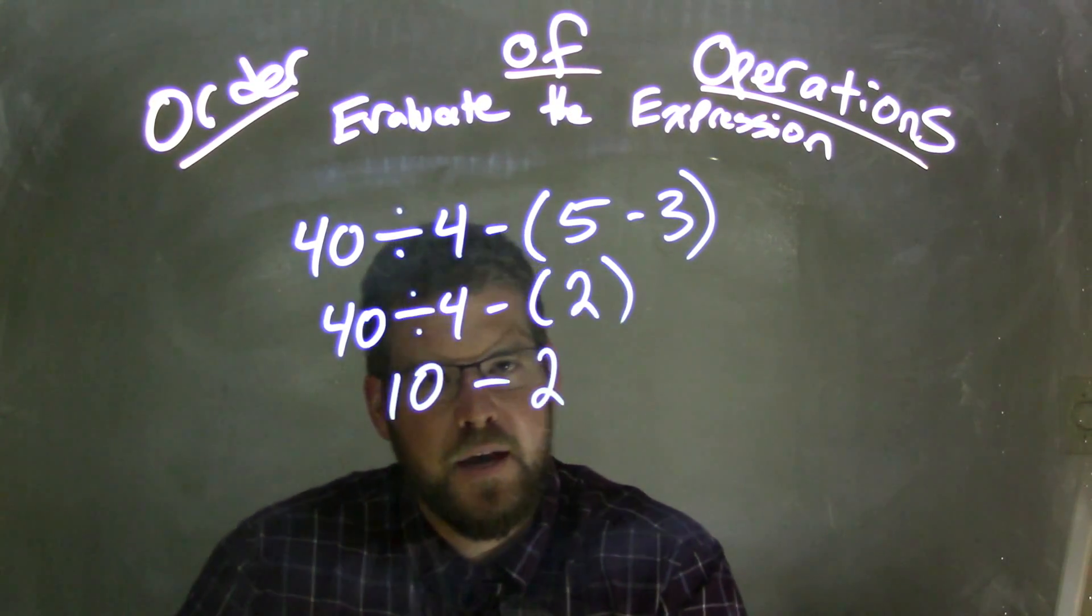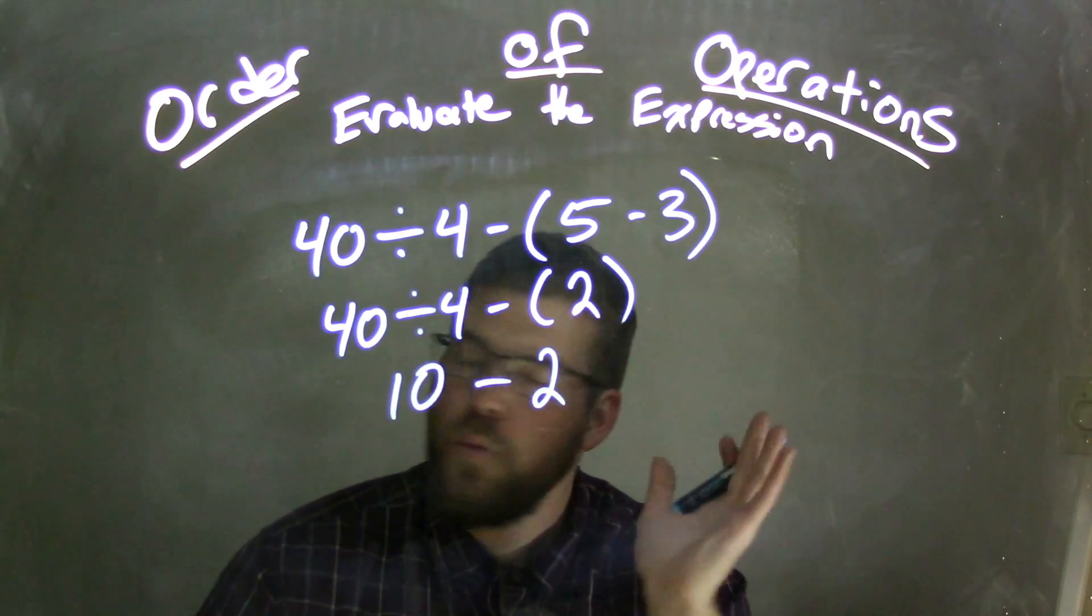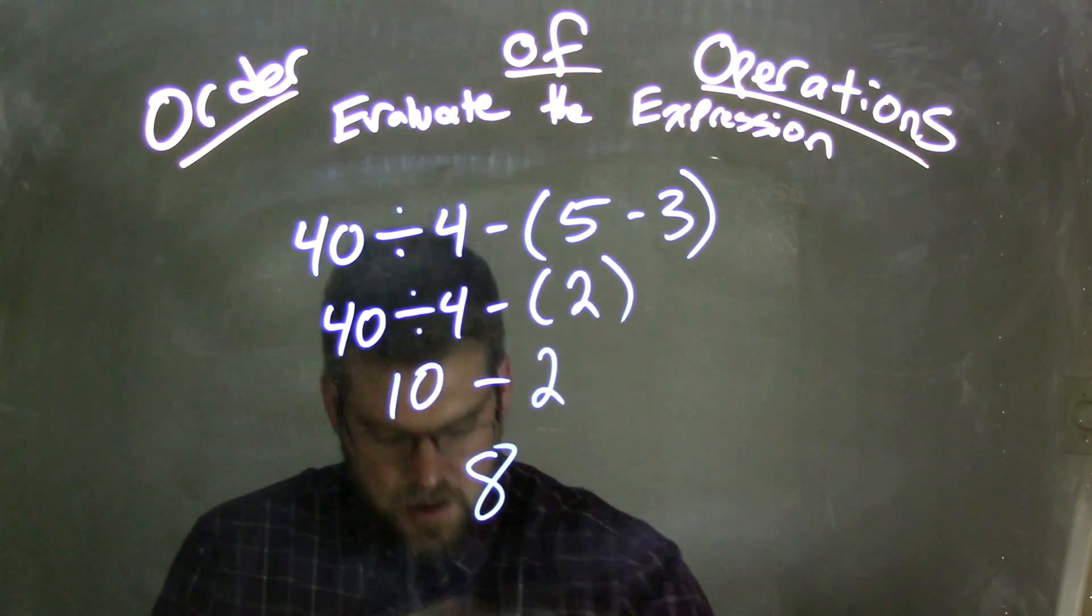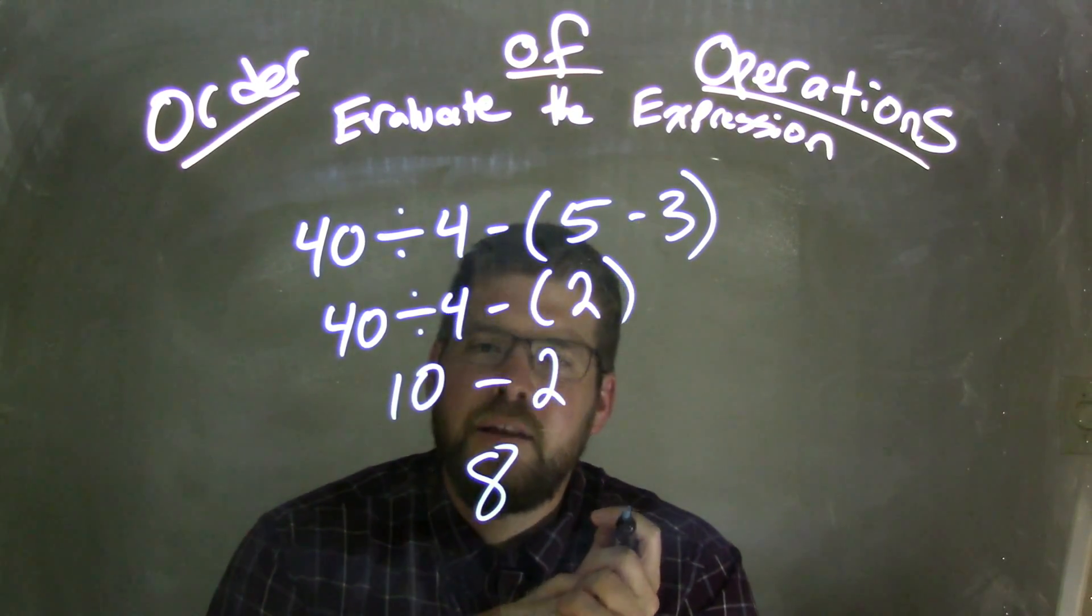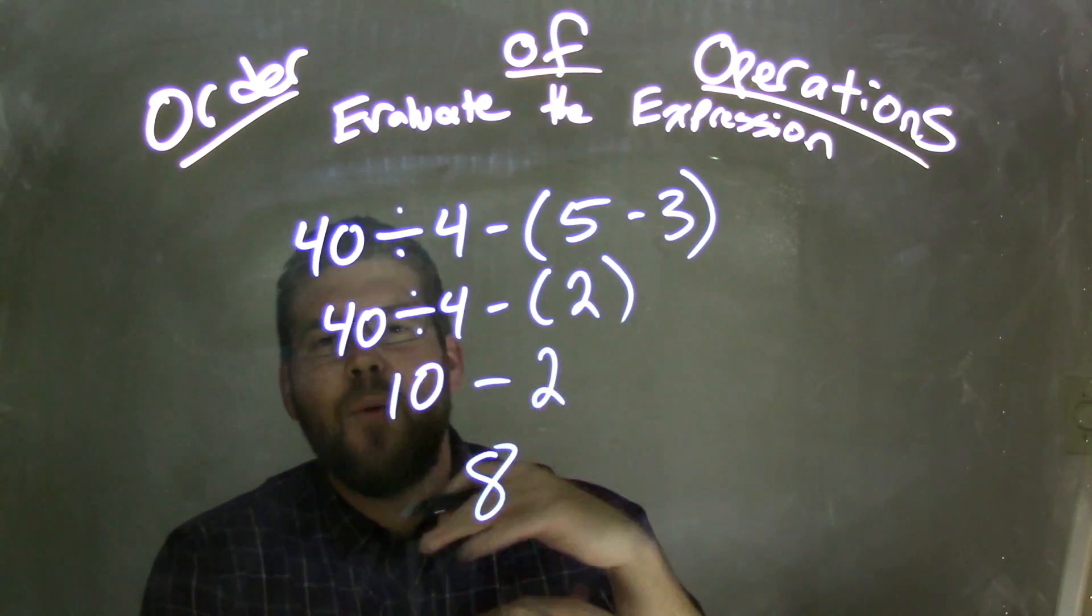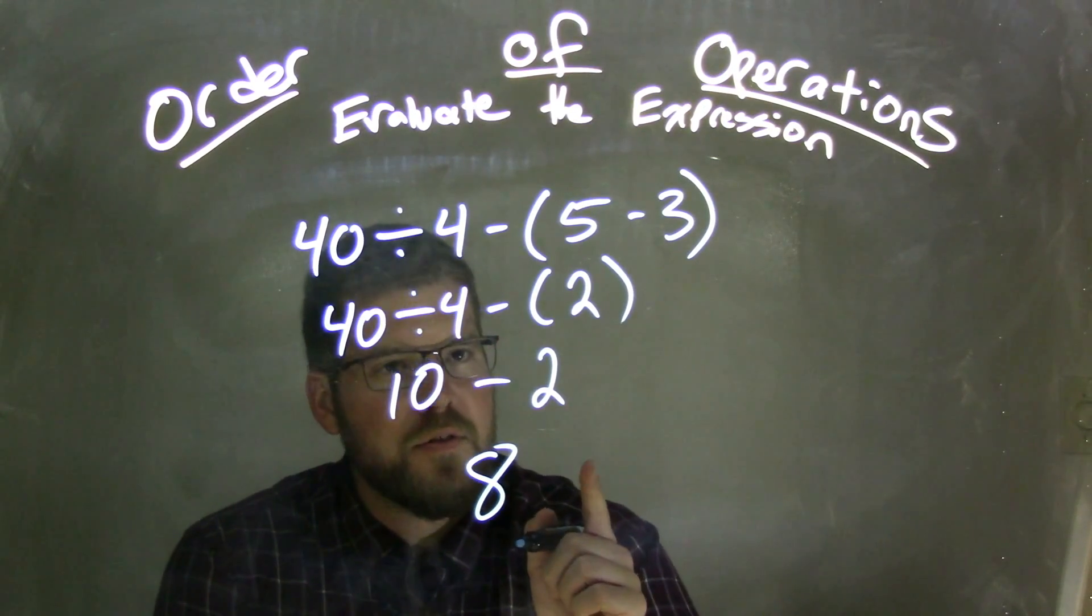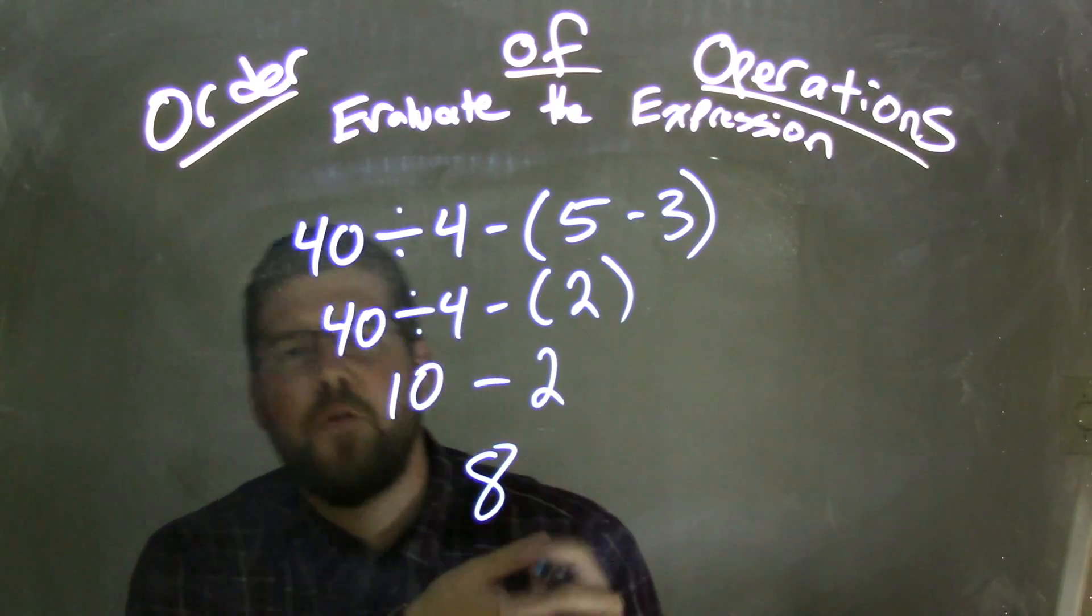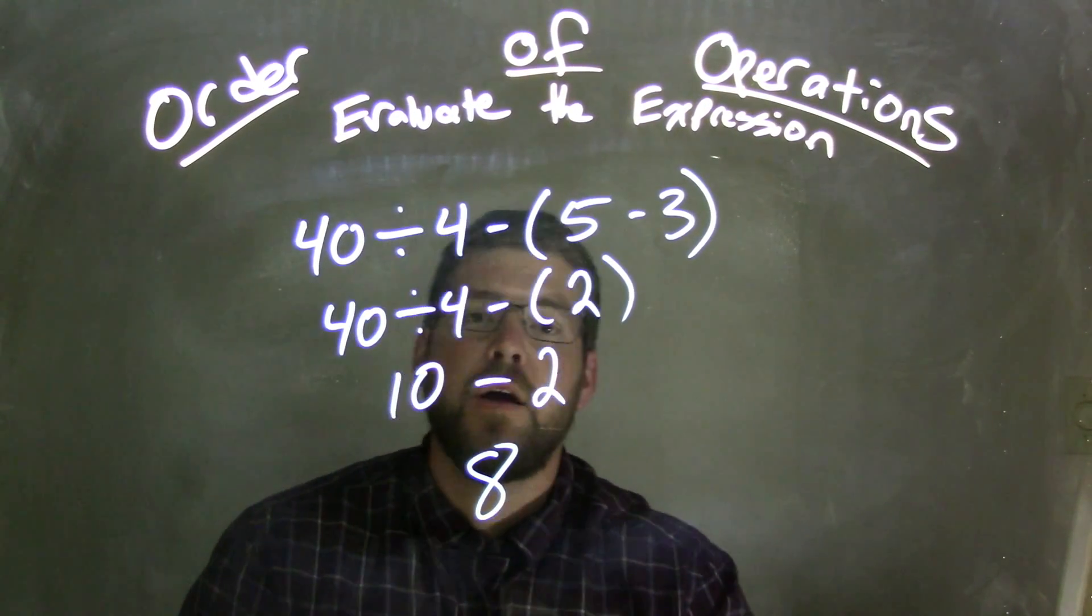So 40 divided by 4 is 10. And then we have 10 minus 2, which comes out to be 8. So my final answer here is 8. Again, we have division, subtraction, and another subtraction in parentheses. We dealt with the parentheses first, and then we had to go back to the division to get our final answer of 8.